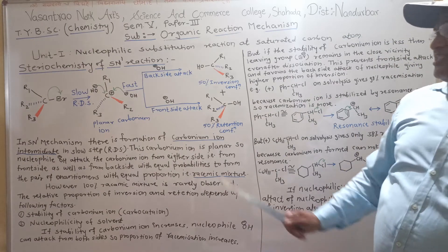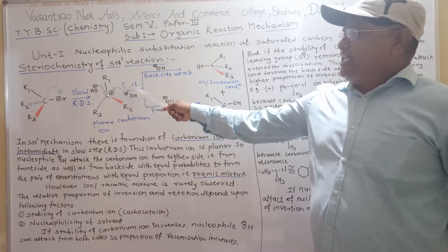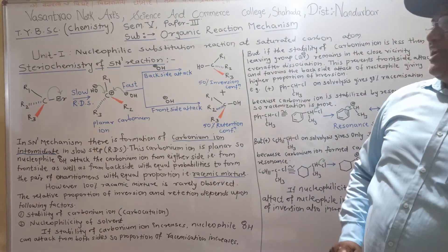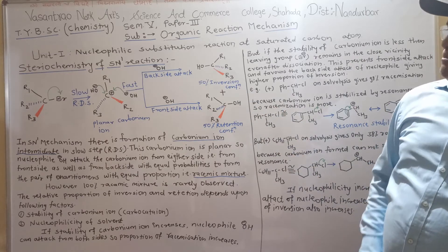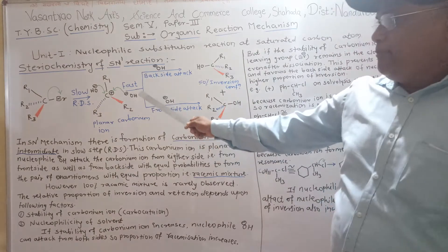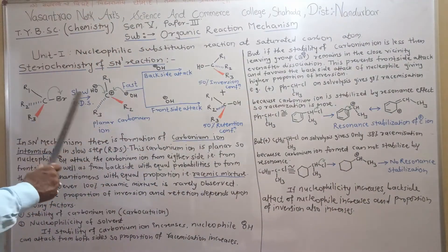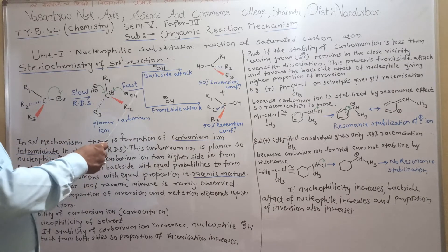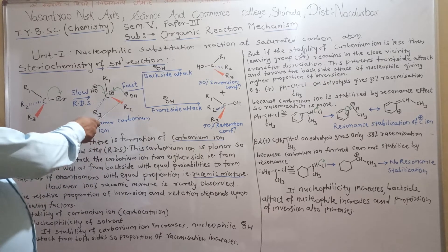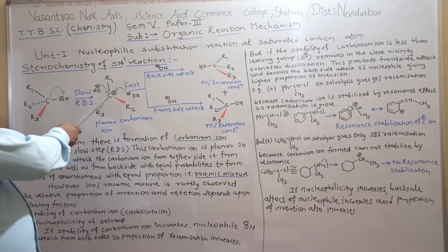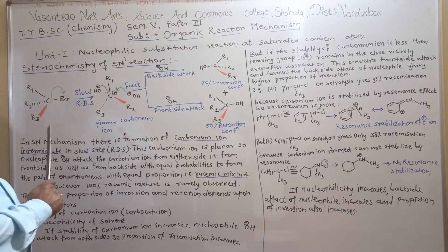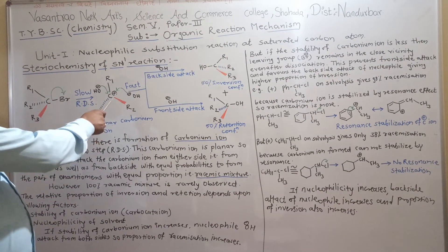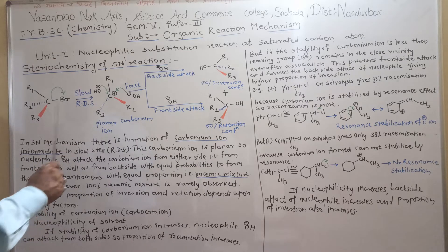If the stability of the carbonium ion increases, then the OH nucleophile attacks equally from both sides and we get 100% racemization. But if the stability of the carbonium ion is less, then the nucleophile attacks from the back side and the attack of the nucleophile is prevented from the front side. Hence, the percentage of inversion of configuration increases.